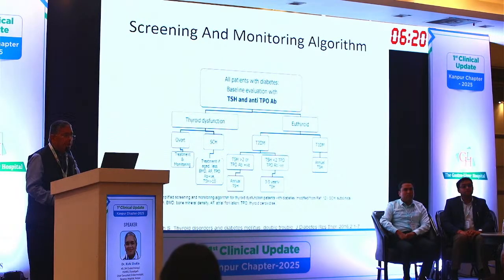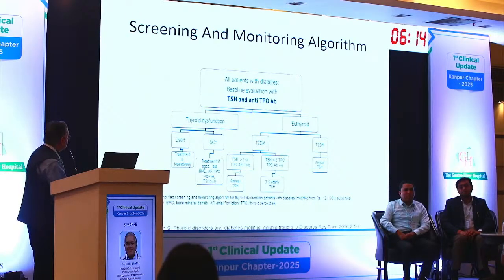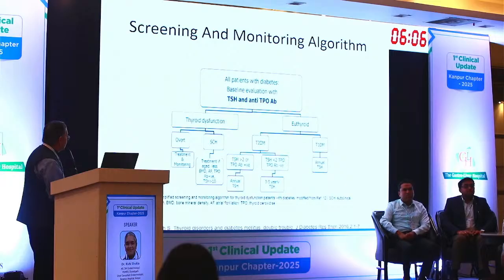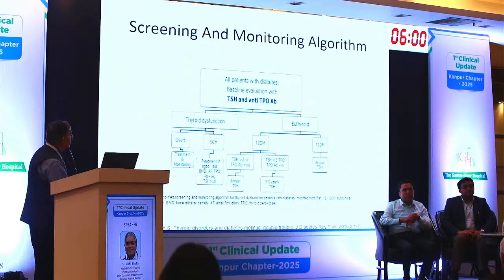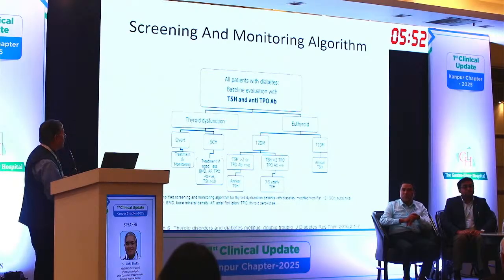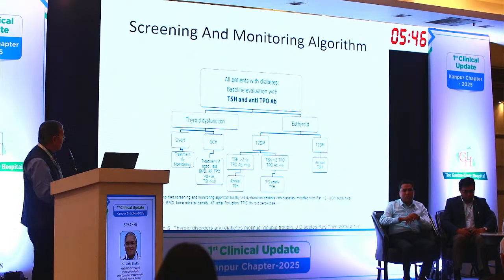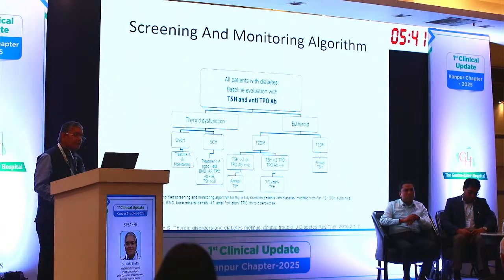Regarding screening for subclinical hypothyroidism: overt hypothyroidism has to be treated. If there is subclinical hypothyroidism with antibody positive, keep a close track. If TSH is more than 10, treat in any case. If TSH is more than 2 with type 2 diabetes, repeat TSH annually. If TSH is less than 2 and TPO negative, follow-up can be less frequent. For type 1 diabetes, annual TSH and celiac disease screening is important.